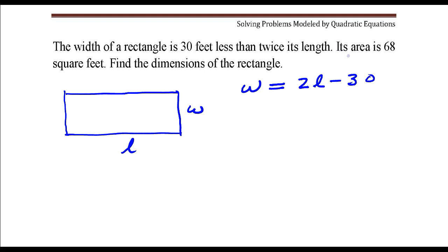The area, it says, is 68 square feet. Well, the formula for area of a rectangle is length times width. And that area, according to the second sentence, is 68 square feet. 68 is length times width.